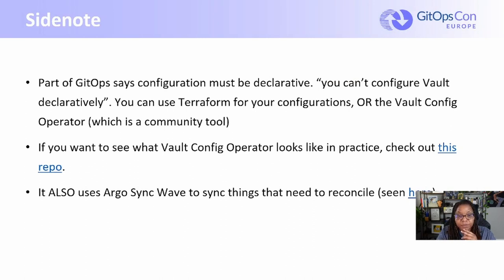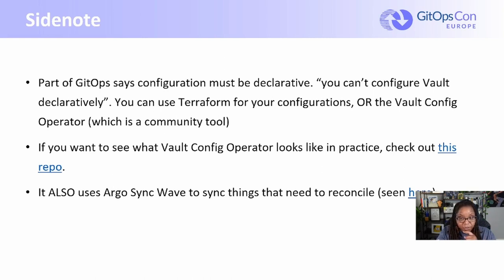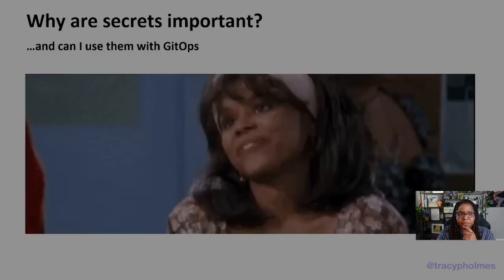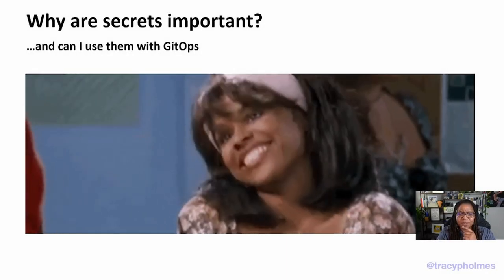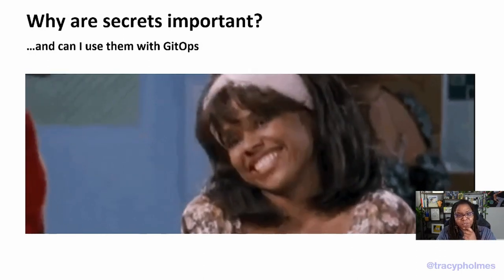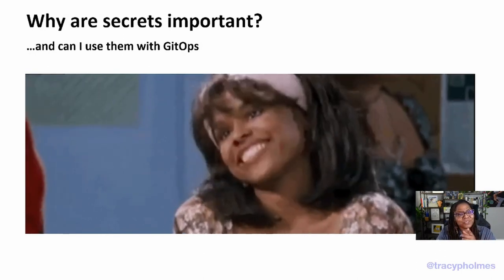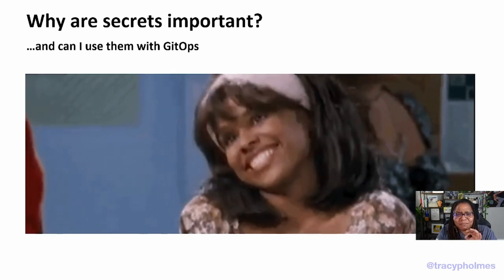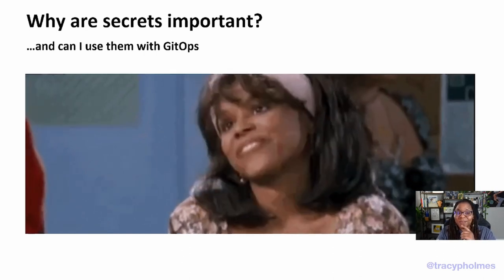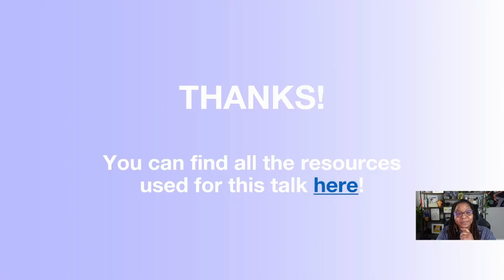Part of GitOps says configuration must be declarative, and you can configure Vault declaratively. You can use Terraform for your configs or the Vault config operator, which is a community tool. There are links on this page if you want to see what the Vault config operator looks like in practice, or how Argo SyncWave works to sync things that need to reconcile. In conclusion, why are secrets important and can I use them with GitOps? At the end of the day, my question is: do we really need to commit our secrets in version control? Is that the only thing keeping you from GitOps? Let us know in the chat. Thanks.